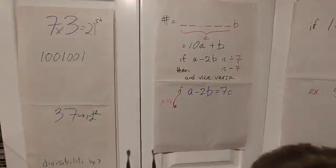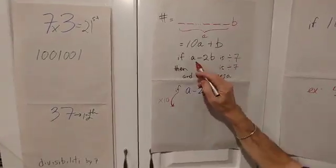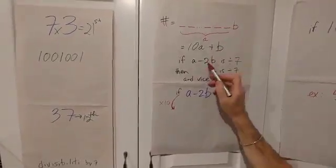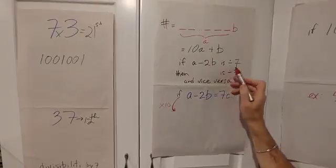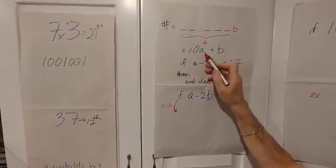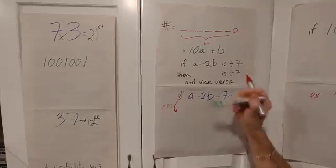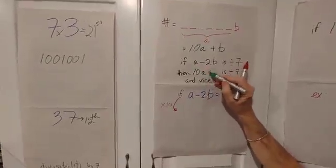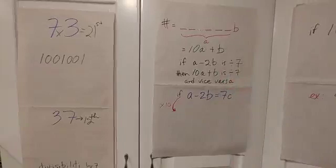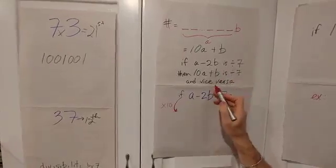So what people say, the rule is, if this number A minus two times this number is divisible by seven, then 10A plus B is divisible by seven. And the reverse is true as well.